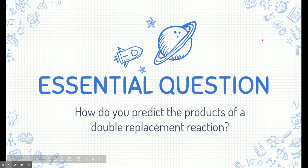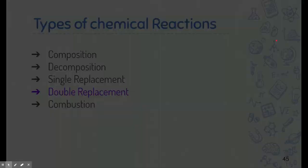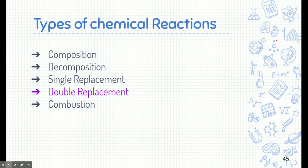Let's start with the essential question. Write this at the top of your page, preferably emphasize it with a colored pen. How do you predict the products of a double replacement reaction? This question relates to the learning targets you're going to be assessed on, and we're going to try to answer this at a deep level at the end of the video.